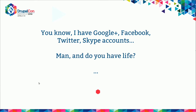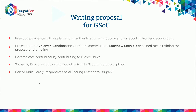Social networks have become a very important part of life, and at Social API we are trying to do the same — integrating social authentication and posting in Drupal websites. I wrote a proposal for my GSoC. As part of GCI 2016, my brother participated with Drupal — he created Social Auth Twitter and became a grand prize winner, which inspired me to participate in GSoC with Drupal in 2017. My previous experience with PHP and integrating social authentication for Facebook and Google in front-end applications helped me. I became a core contributor to Drupal by completing 13 core issues. After that, I started writing my proposal, where Valentin and Mateo helped me refine it and set the milestones.